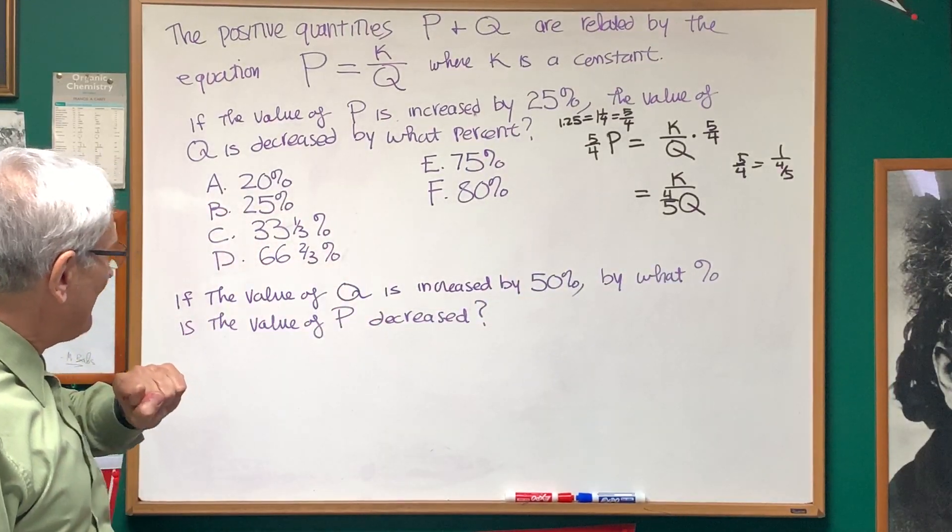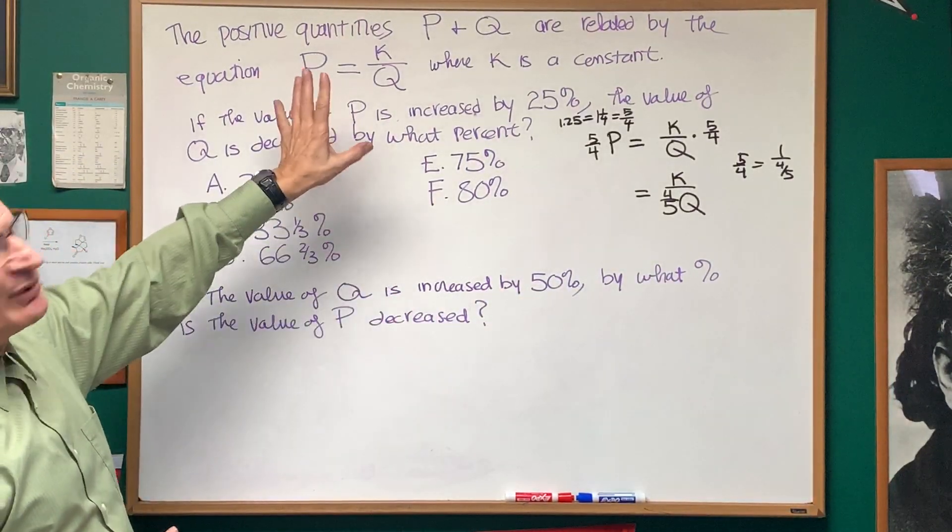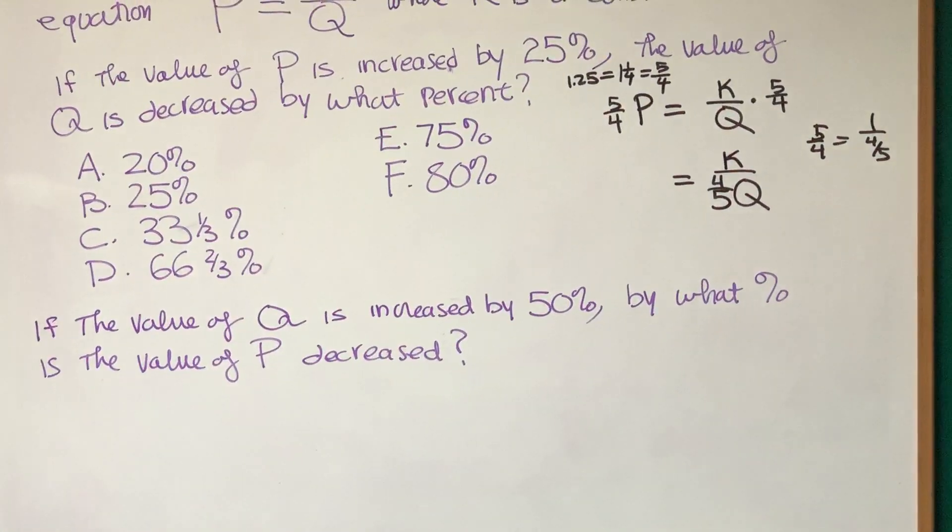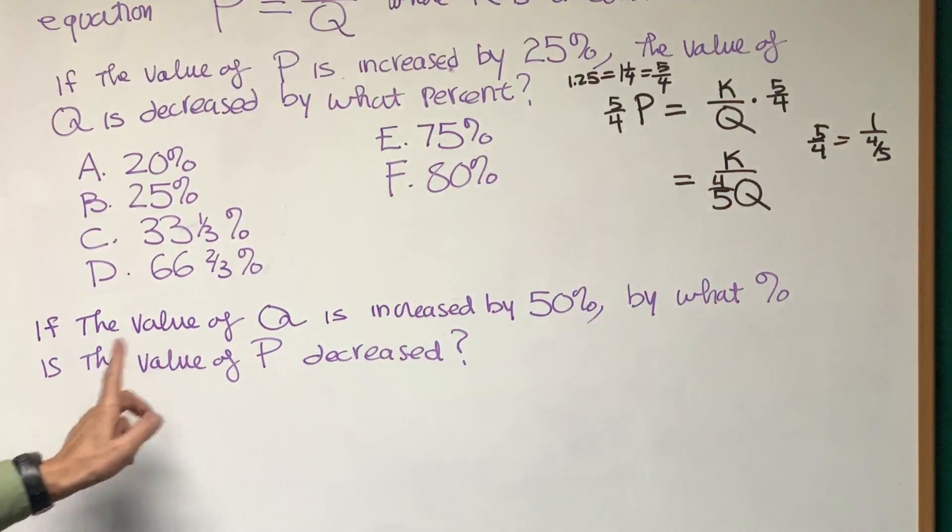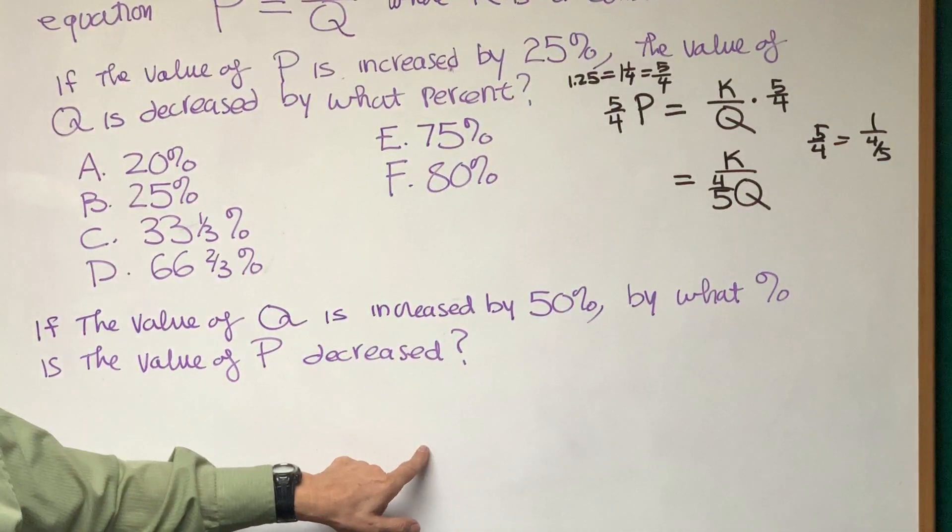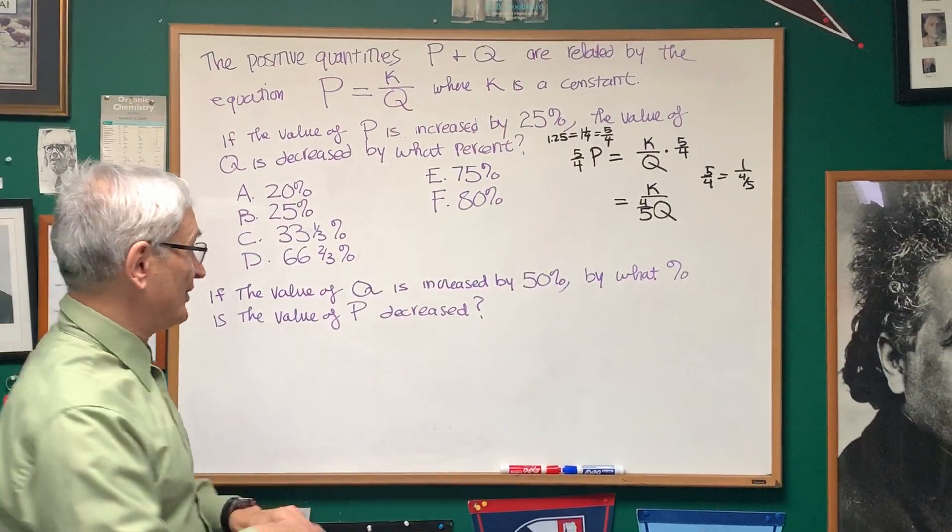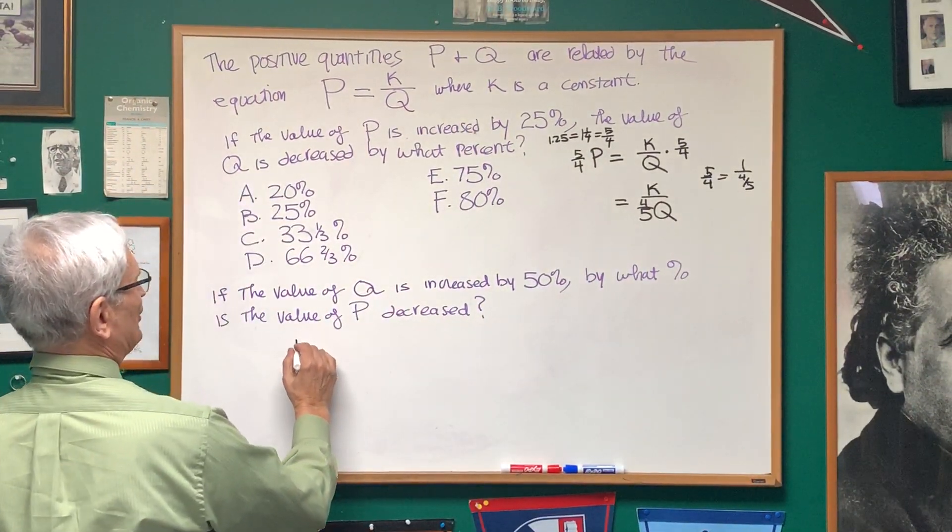Very similar problem. If the value of Q, we'll take the very same relation. If the value of Q is increased by 50%, by what percent is the value of P decreased? And again, the inverse relationship. One increases, the other one decreases. So, let's write the relation again.